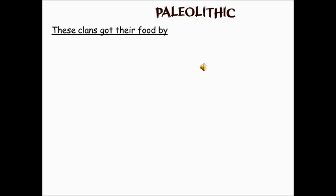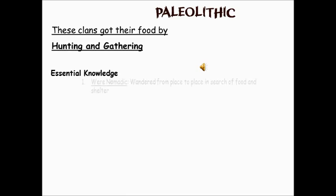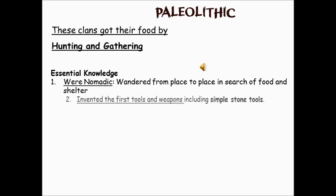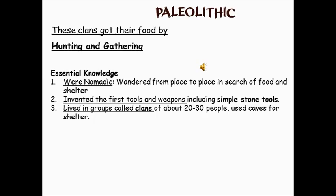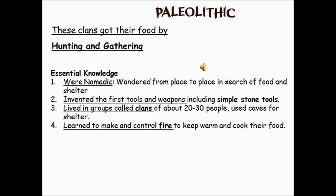So let's talk Paleolithic. What happened is people start to grow and move around in small groups — these are called hunter-gathering clans. Here are the traits of hunter-gatherer societies: first, people are nomadic — they wander from place to place in search of food and shelter. Second, they had simple stone tools — they invented the first tools and weapons during this time period. They lived in groups called clans, usually 20 to 30 people max, and used caves for shelter. They also learned how to control and make fire during the Paleolithic period — to keep warm, and later to cook their food.